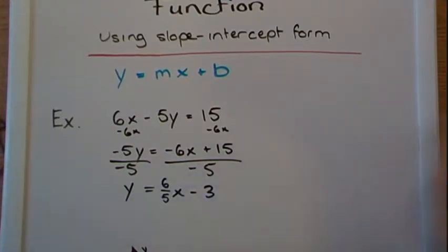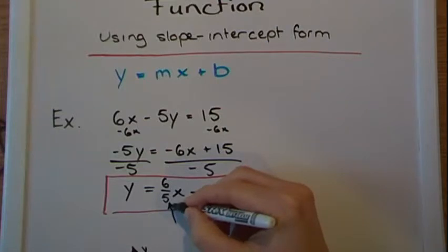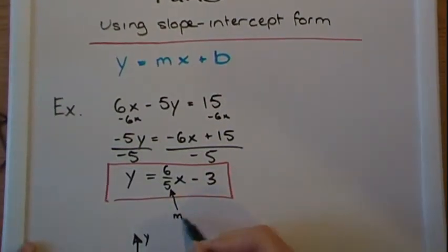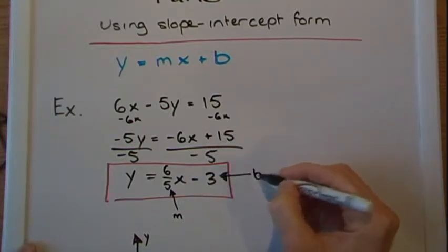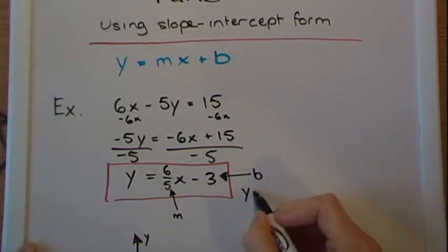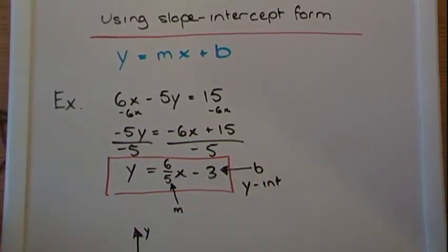So this is our equation now. We have our m right here and we have our b right here. And the b, remember, is the y-intercept. So we're given the slope and we're given the y-intercept just by solving for y here, and these two things are going to allow us to graph this equation or graph this function.